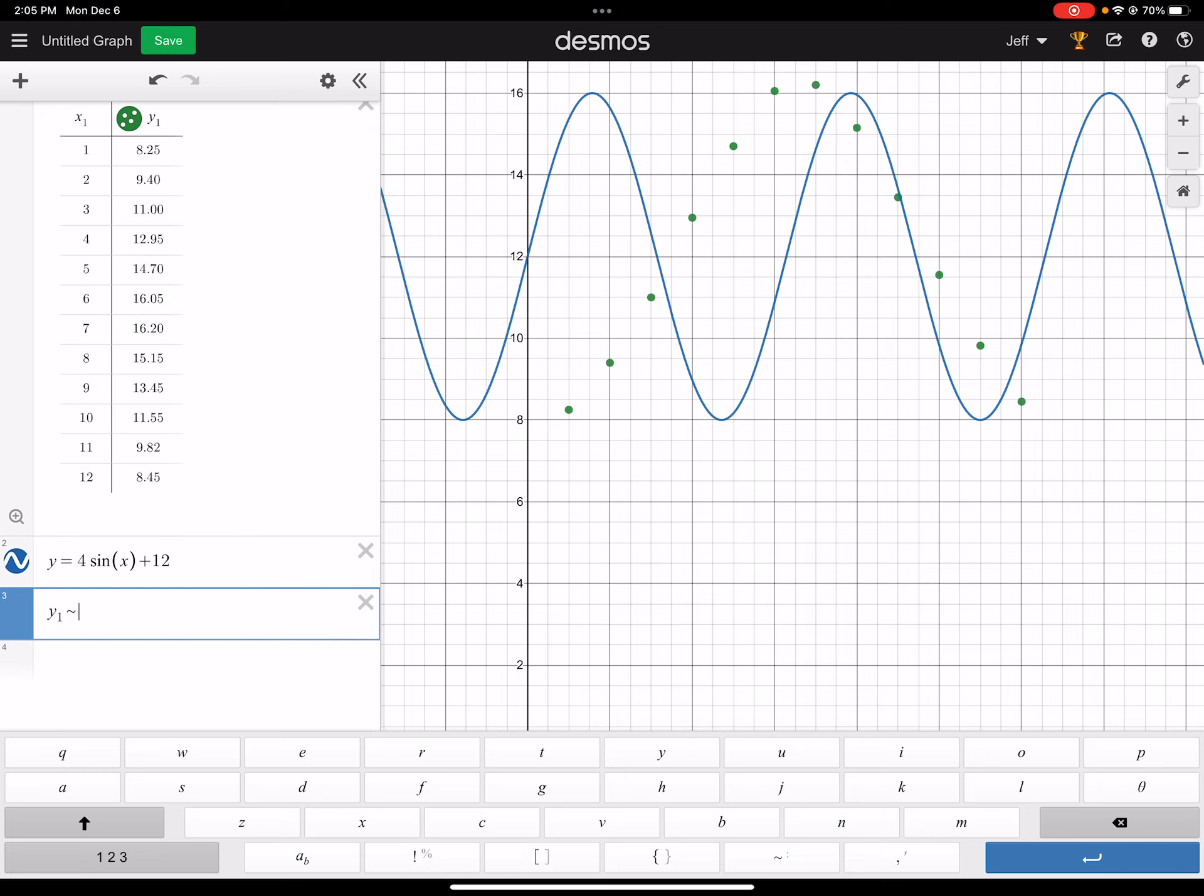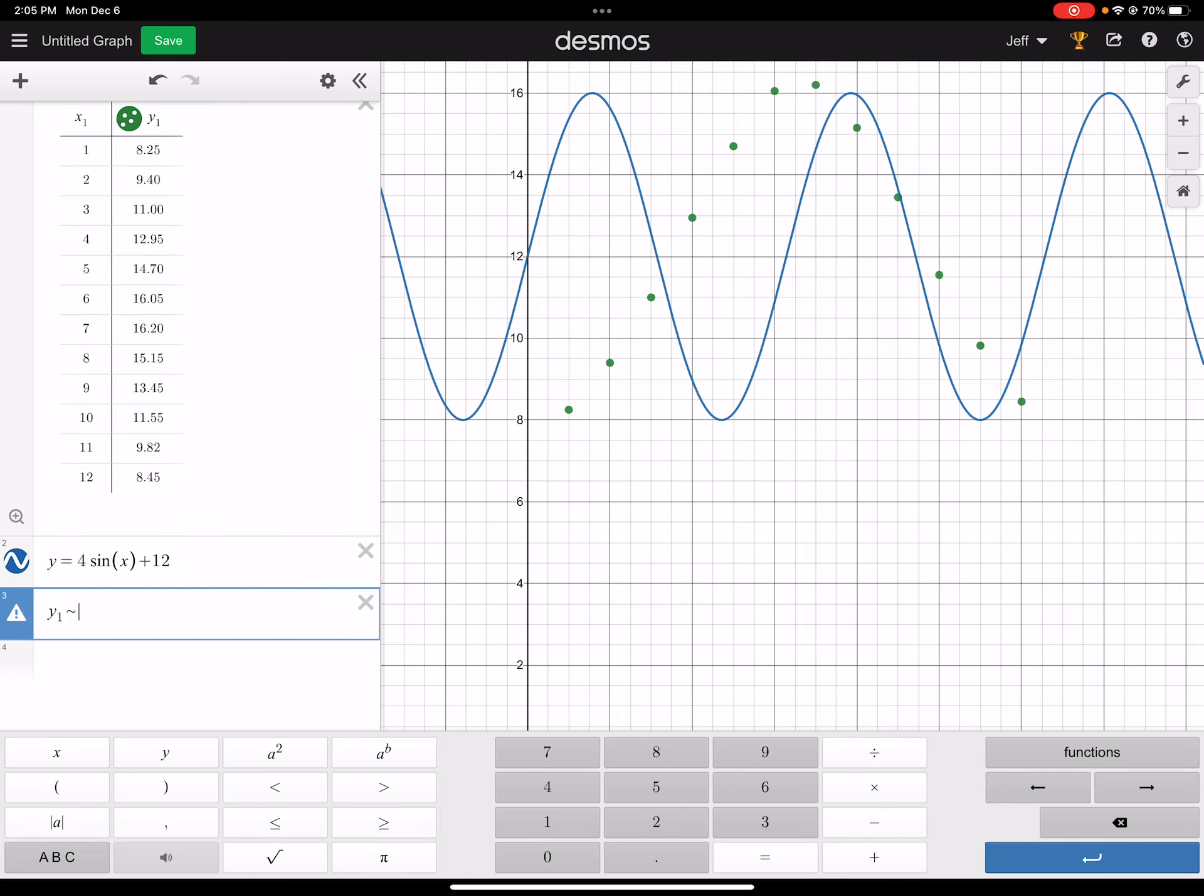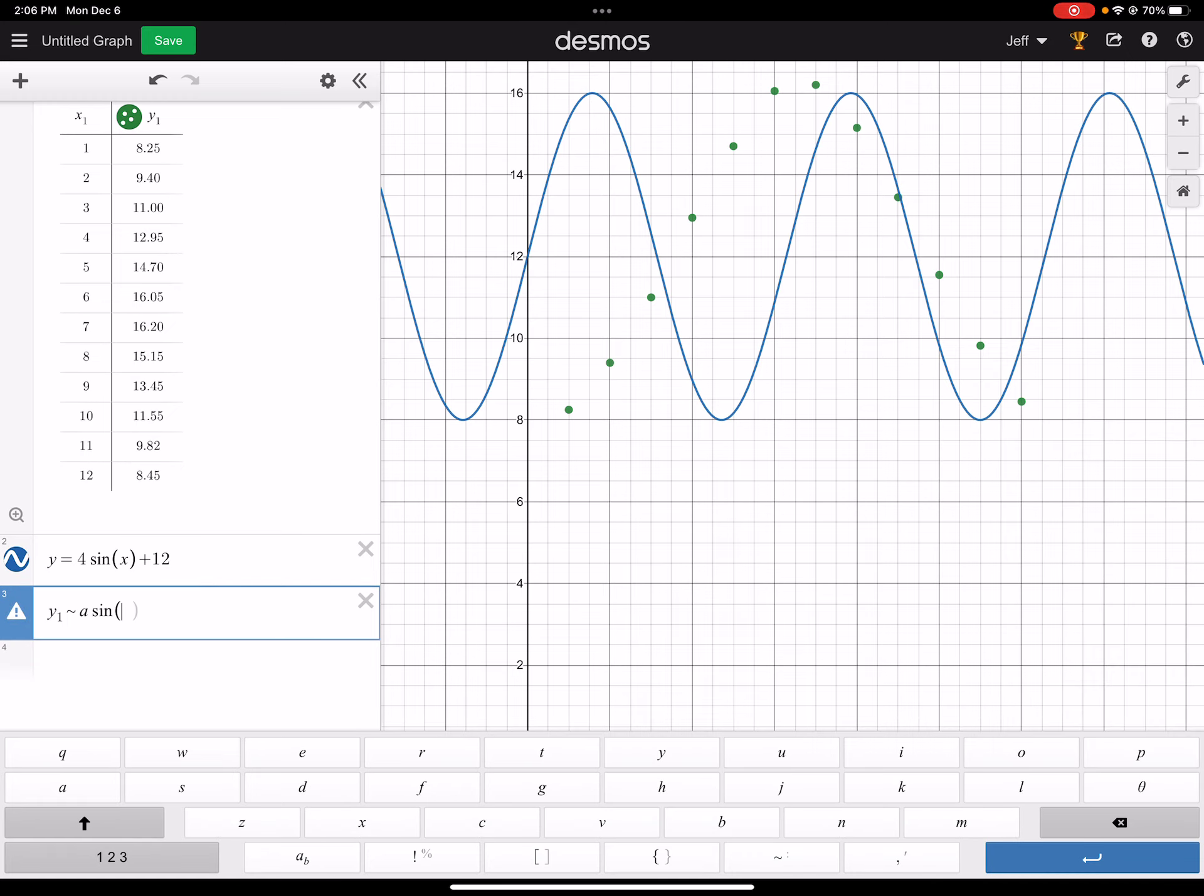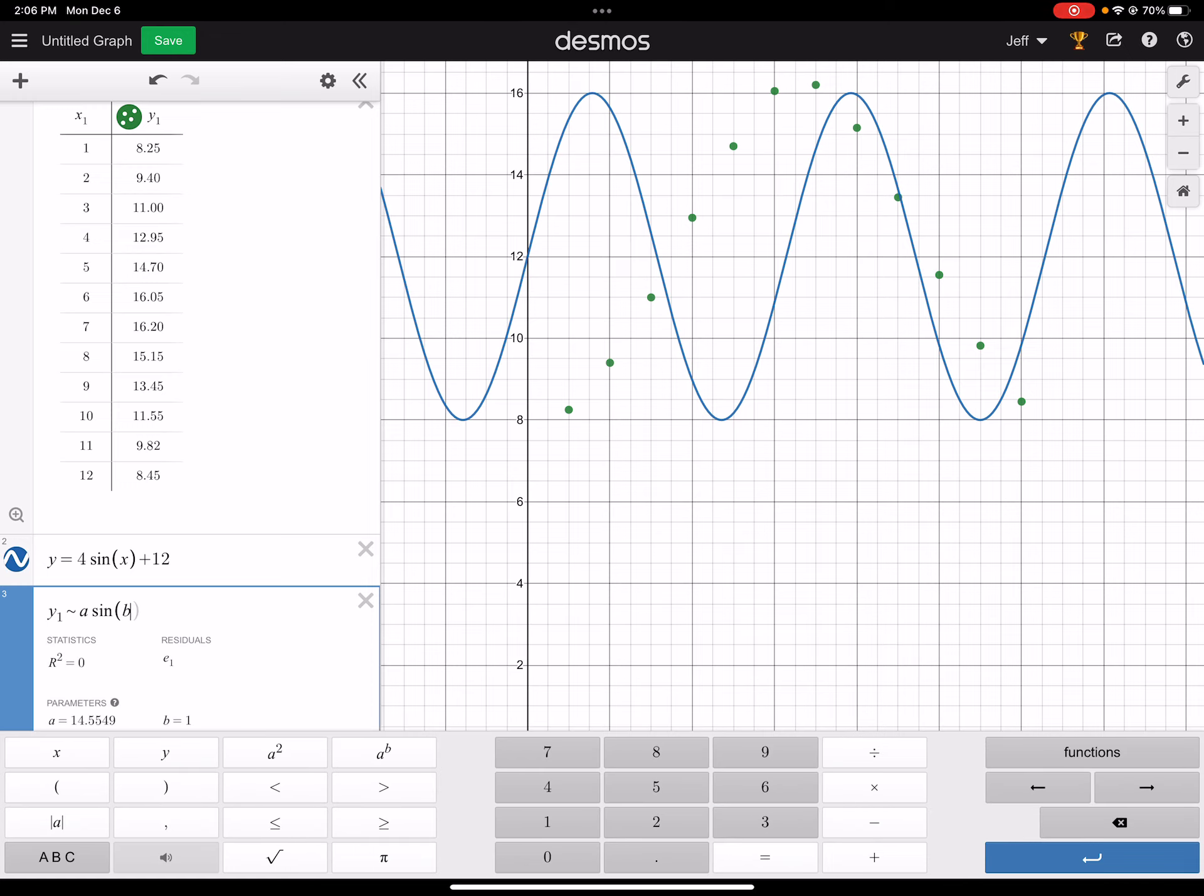Where's the tilde? That's that guy. Okay, so instead of equals, I'll use that. And then I just type in the base function for a sine graph. So it would be a and then sine of b. B, and then I have to put a bracket in. And then x minus c.